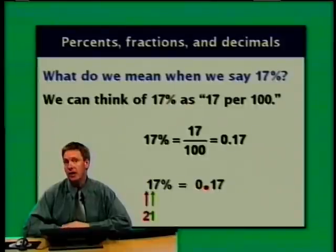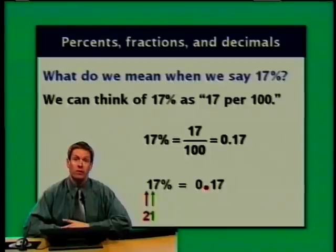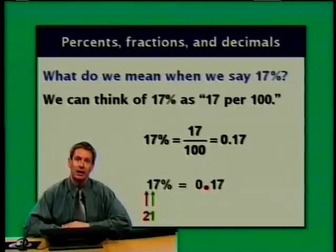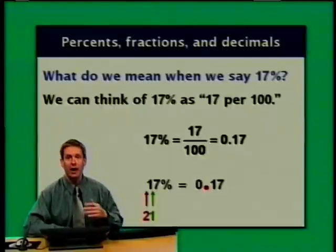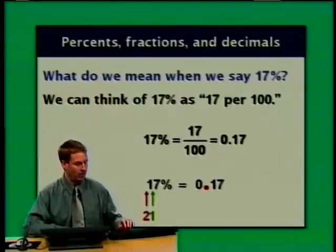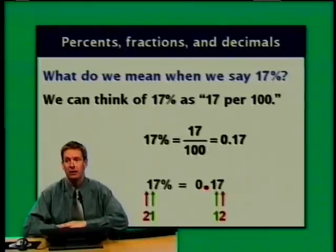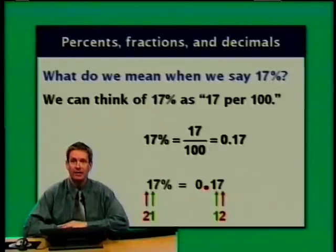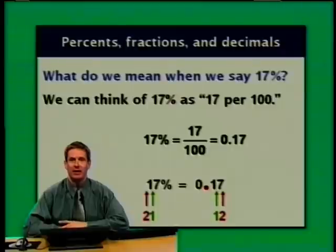Now, suppose I had started with the decimal. The reverse of moving the decimal point two places left is moving it two places right. So if I focus on the decimal point between the 0 and the 1 in 0.17, and move it right two places, I end up with 17. So 0.17 equals 17%.